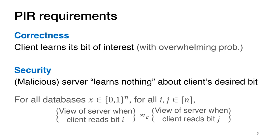More formally, a PIR protocol has to satisfy the following properties. First, correctness, meaning that an honest client interacting with an honest server should learn the correct value of its bit of interest. And second, security, meaning that the server should learn nothing about which bit the client is reading. Specifically, the view of the server when the client is reading bit i should be indistinguishable from the view of the server when the client is reading bit j.